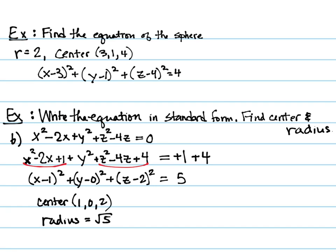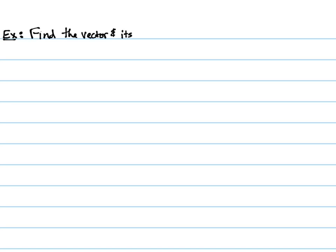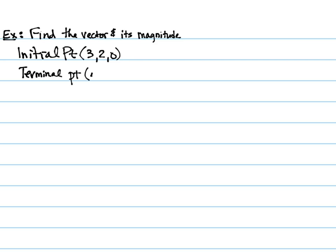What we did in section 11.1 was vectors in 2D — now we're going to do vectors in three dimensions. This is all just extending by a dimension. We're going to find the vector and its magnitude given an initial point of 3, 2, 0 and a terminal point of 4, 1, 6.